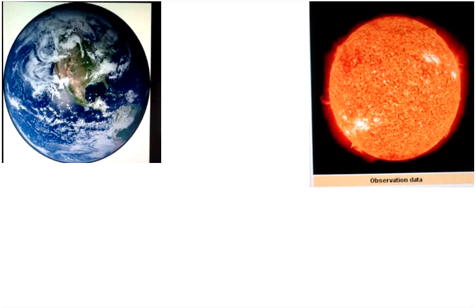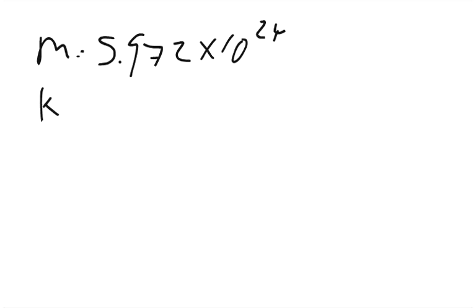Part B says calculate the angular momentum of Earth as it arises from the orbital motion about the Sun. So there's a couple things that are going to change. We still have a mass that's equal to 5.972 times 10 to the 24th. The thing is our k value is going to change because we're talking about a point particle. So we can say that k is equal to 1. And the radius of the orbit is about 150 million kilometers or 150 billion meters.